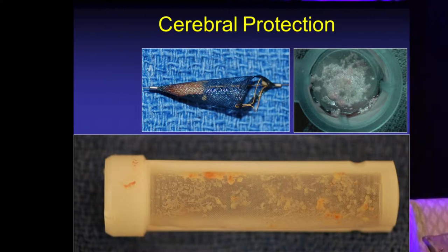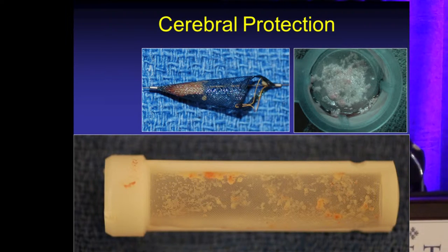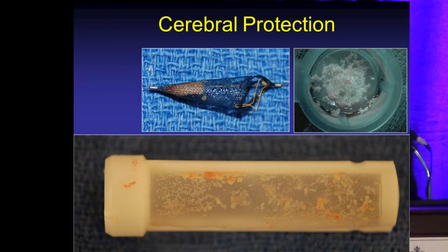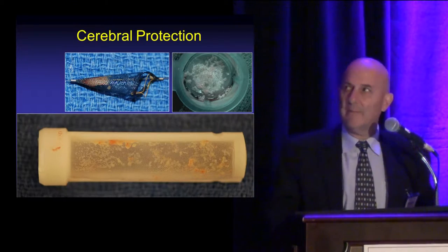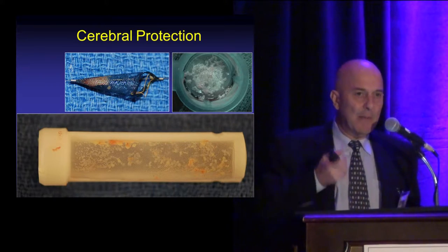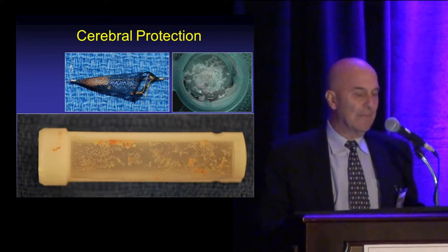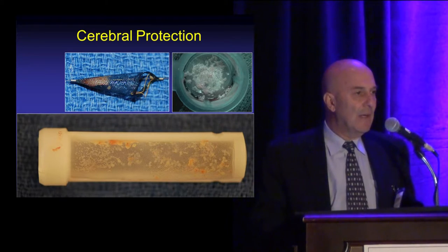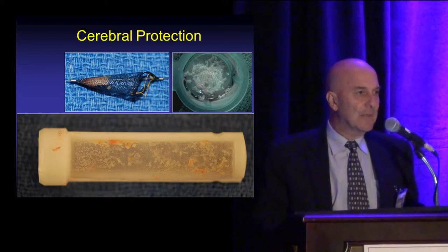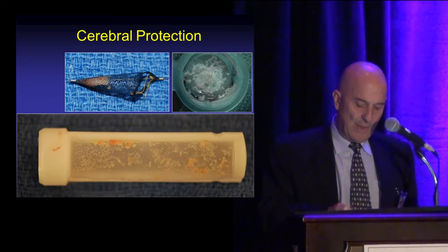Every time we use one of these devices, we can collect particles. In the upper left corner of the slide is a filter with particles collected during carotid artery stenting. On the right is the product of filtration of blood after using a distal occlusion balloon. And at the bottom is a filter with many particles collected using flow reversal during carotid artery stenting.